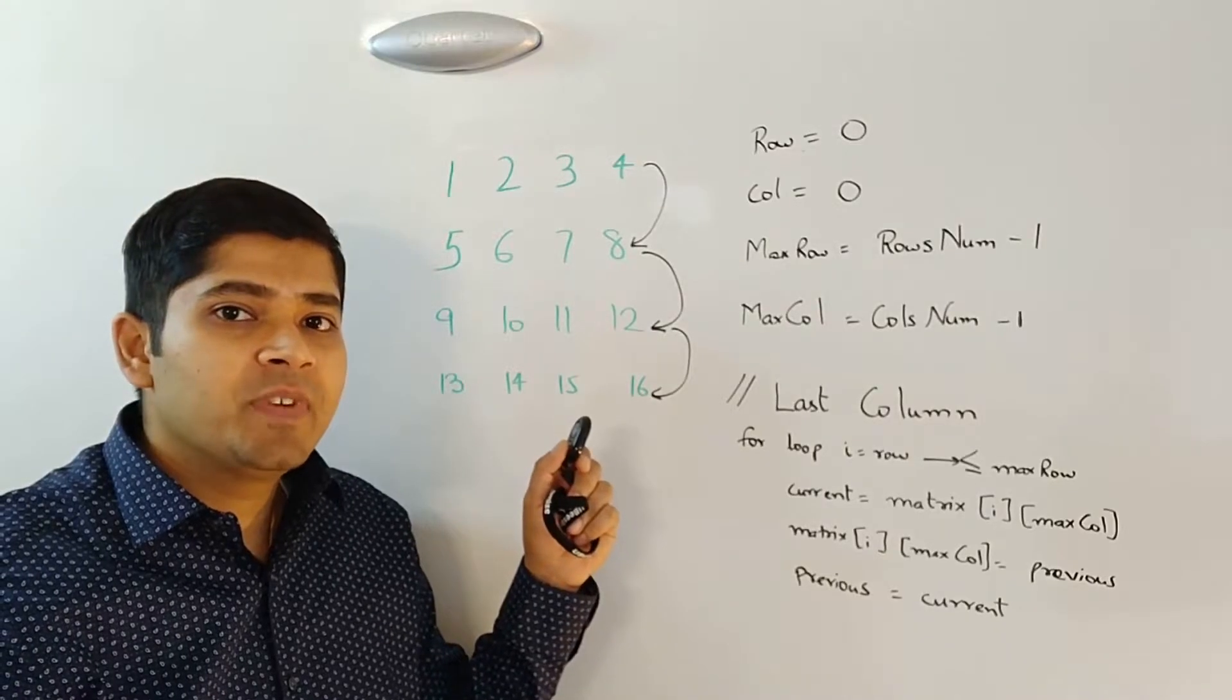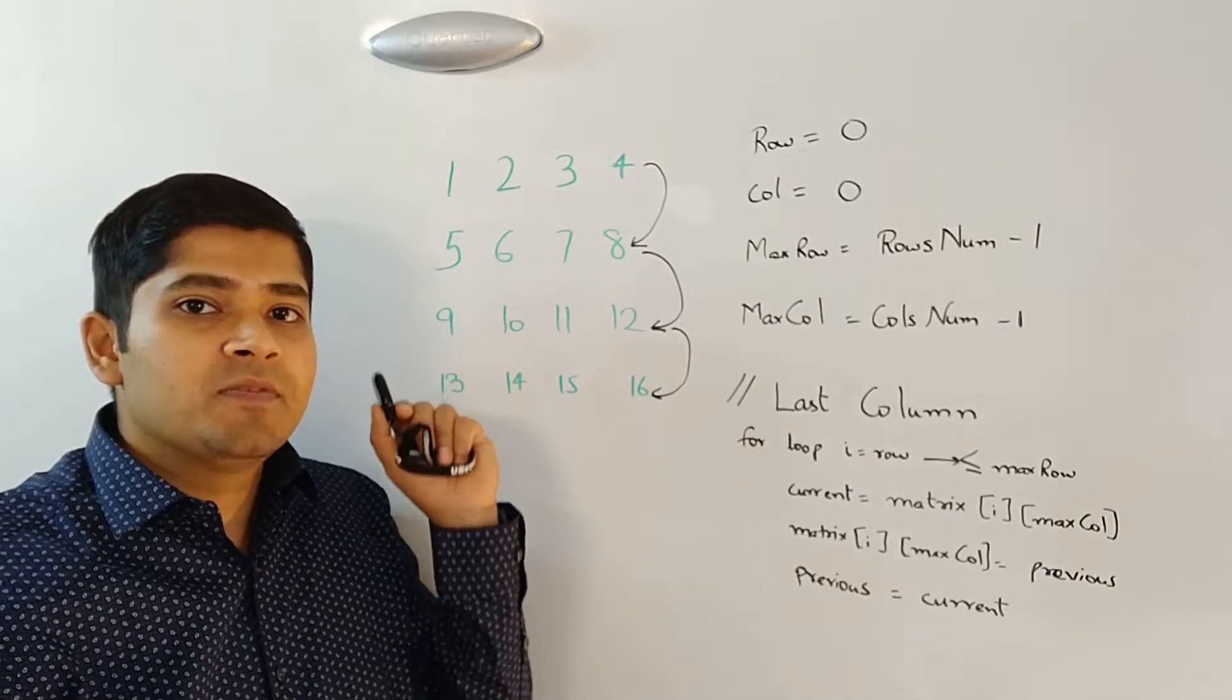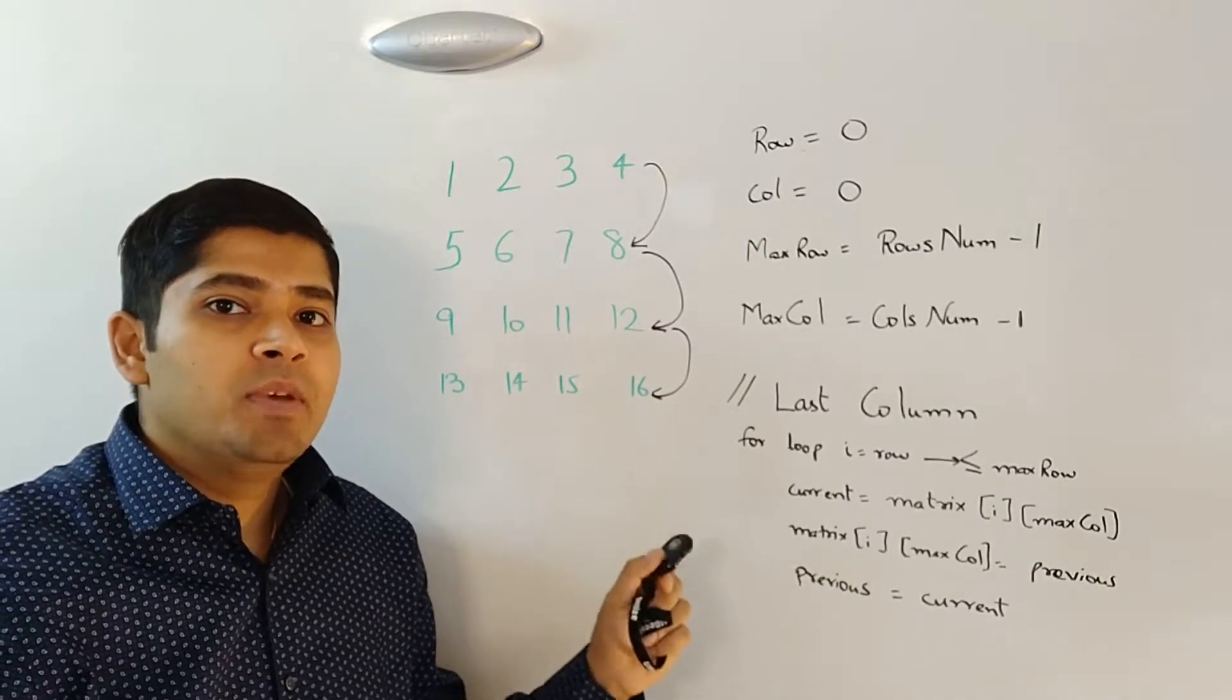So once we are finished with the last column, we follow the same process for the bottom row as well as the first column. We will write two more for loops in a similar fashion.